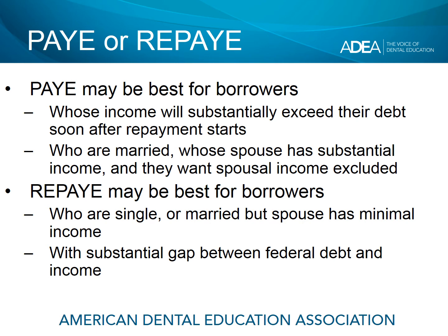As we close this module, let's look at who might benefit best from each plan — and this is an individual decision with exceptions. We think PAY may be best for borrowers whose income is going to jump dramatically after repayment begins and will substantially exceed their debt quickly, as these borrowers won't benefit much from the 50% interest subsidy available with REPAY. PAY may also be best for borrowers who are married, whose spouse has substantial income, and who need to exclude spousal income from the monthly payment calculation, since filing a separate return under PAY means spousal income will not be counted.